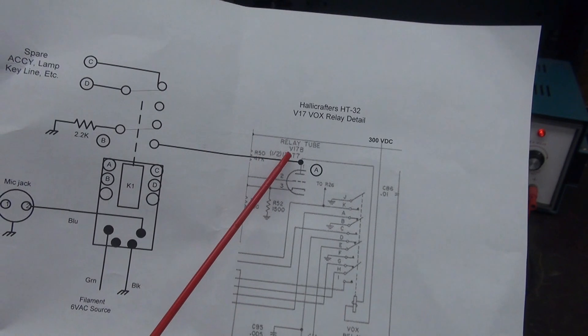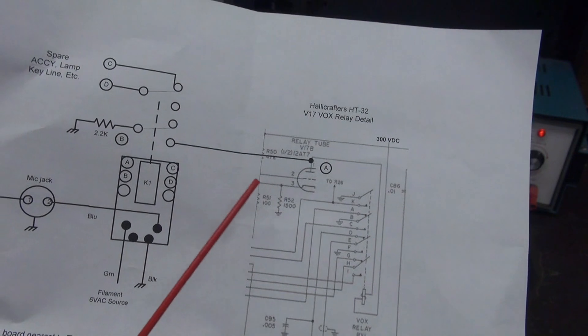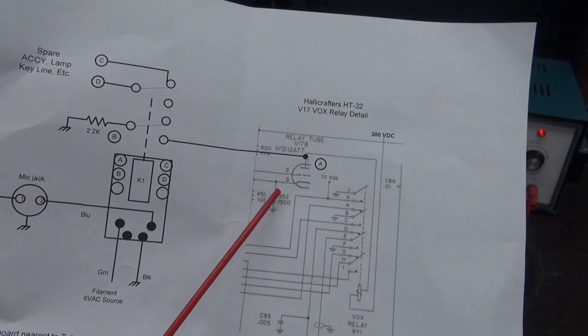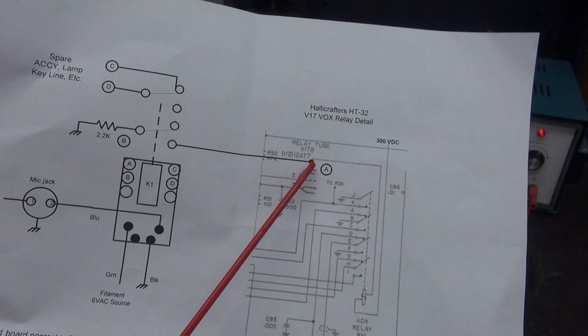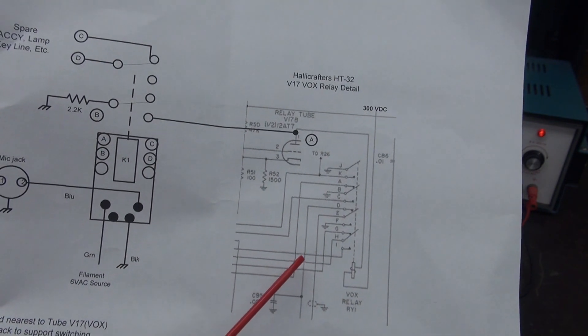Okay, so this is the relay to V17 which is a 12AT7. So when you talk, this is part of the VOX system. Your signal comes in, this tube says, hey, I see audio, conducts current through the tube, pulling in the VOX relay and then you're talking, right?